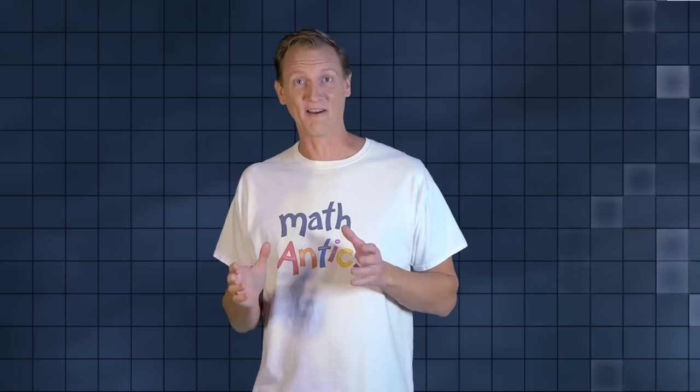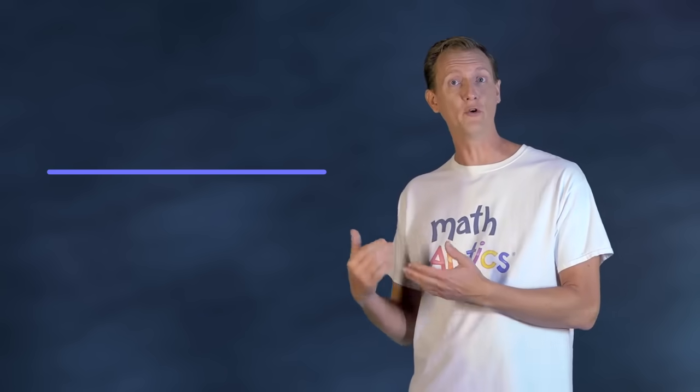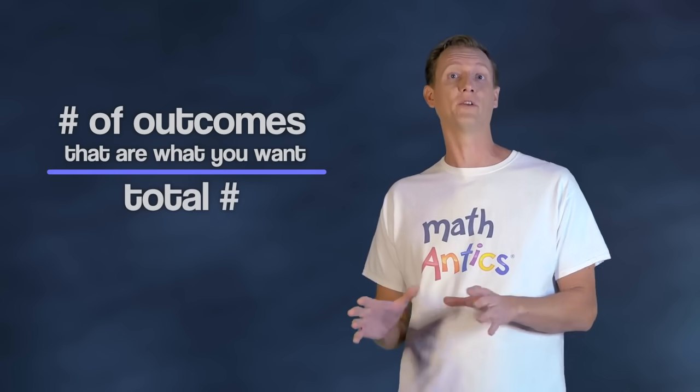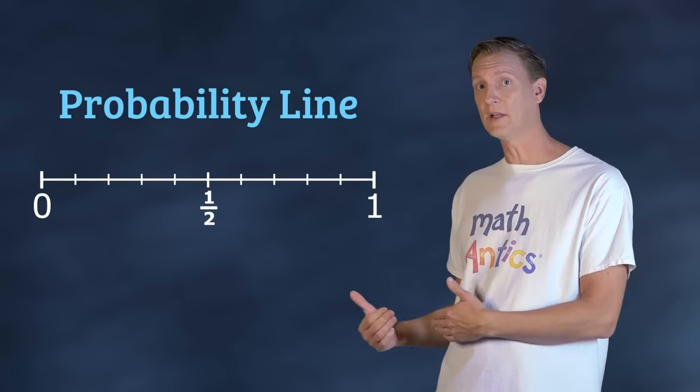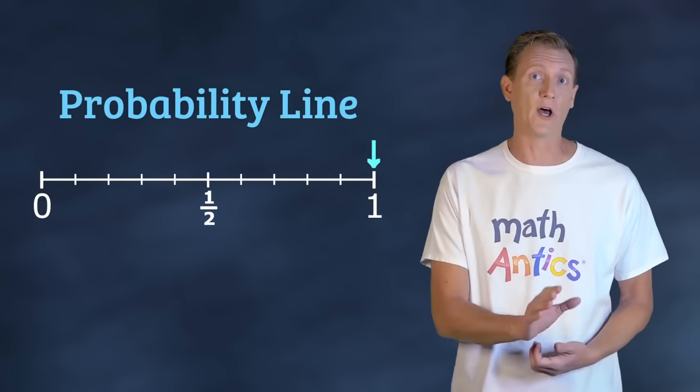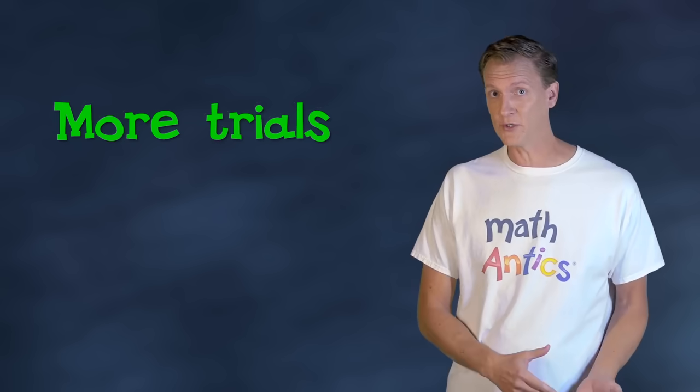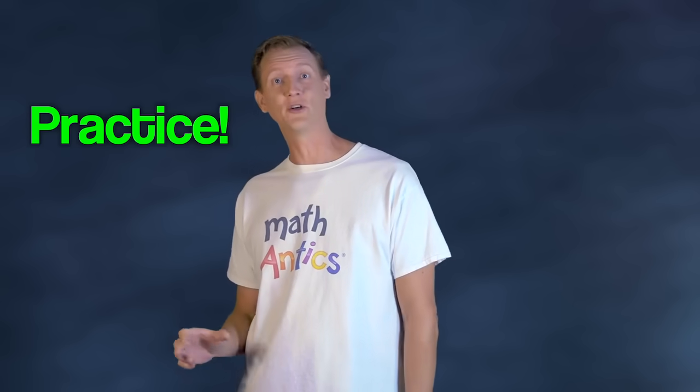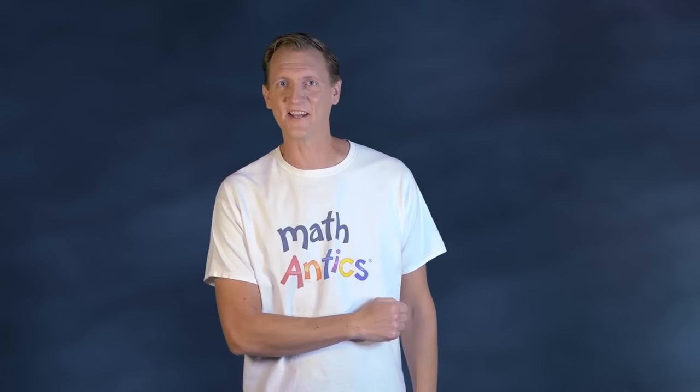Alright, so you should have a pretty good handle on basic probability now. You just have to remember to make a fraction with the numerator being the number of outcomes that give you what you want and the denominator being the total number of possibilities. And we learned about the probability line and that a probability can't be less than 0 or greater than 1 or 100%. We also learned that the more trials or experiments you conduct, the closer your results will get to the expected probabilities. Of course, the way to get good at it is to practice, so be sure to do a lot of problems on your own. As always, thanks for watching Math Antics and I'll see you next time!